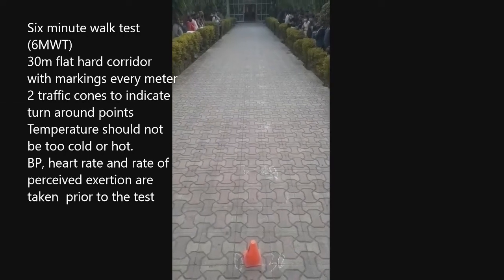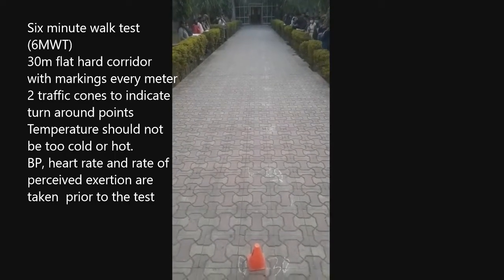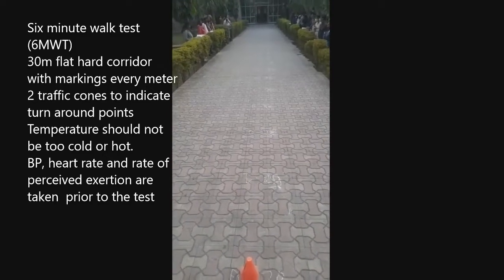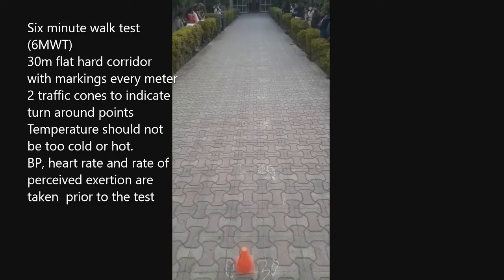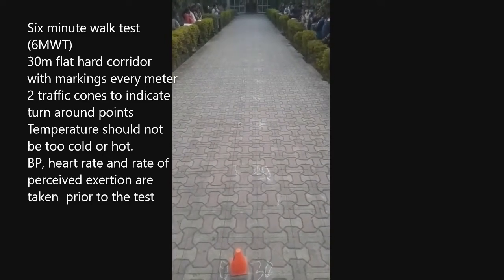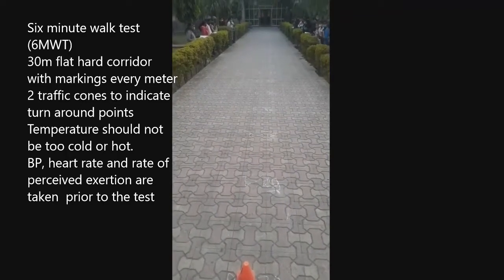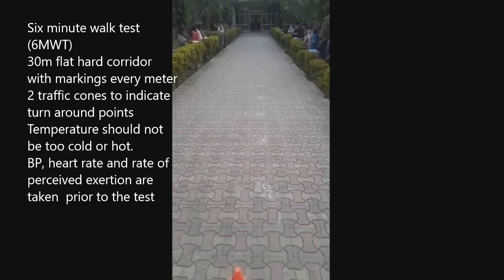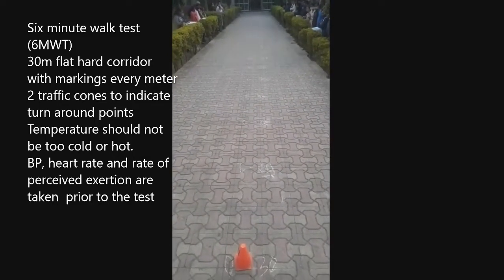Today we are going to conduct the 6 minute walk test. The 6 minute walk test is conducted on a 30 meter corridor. The temperature should be regulated and the surface should be hard. This is a 30 meter track marked at every 1 meter interval, and 2 traffic cones are used at the end to designate the turnaround points.